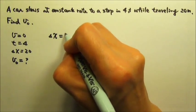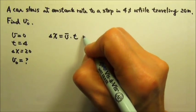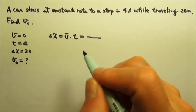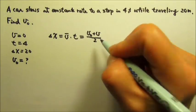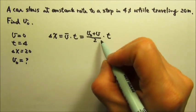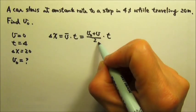That is the displacement is the average velocity times time. And what is the average velocity? It's the average of the initial and final velocities. And this is just for constant acceleration motion.